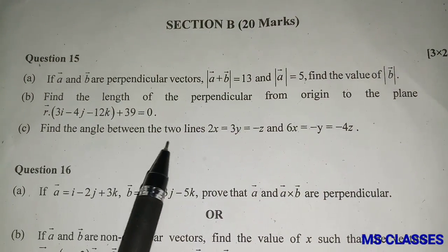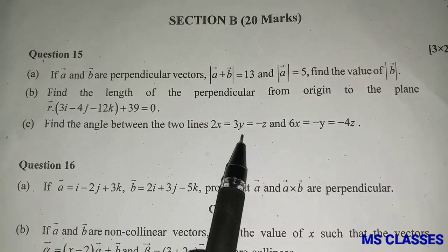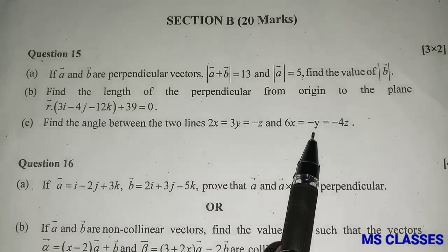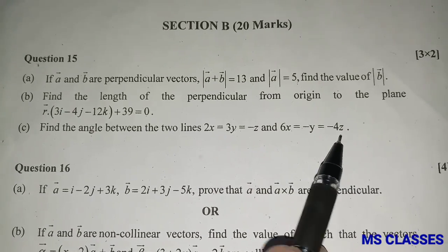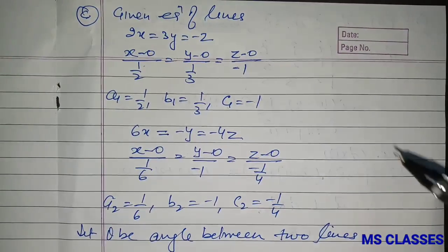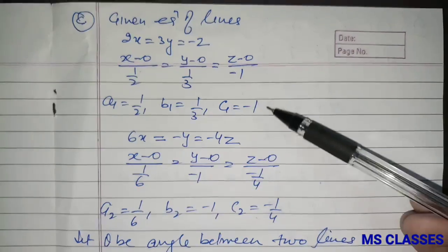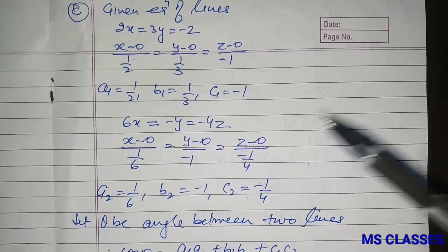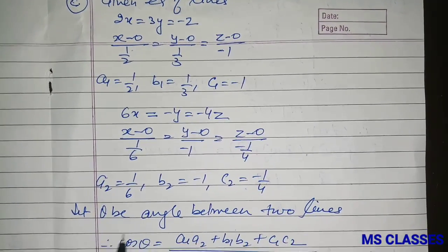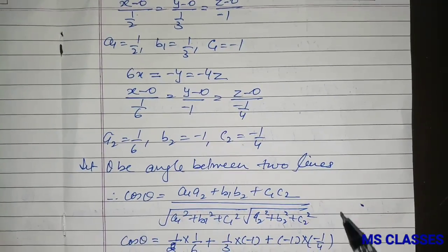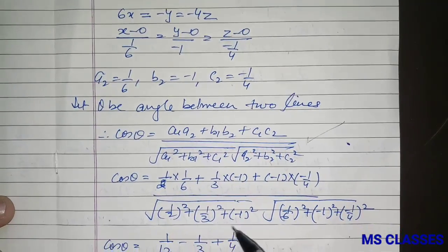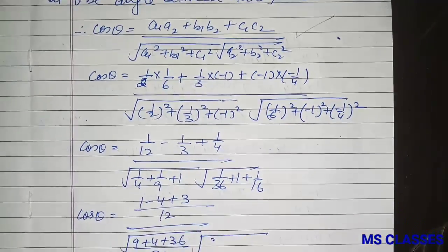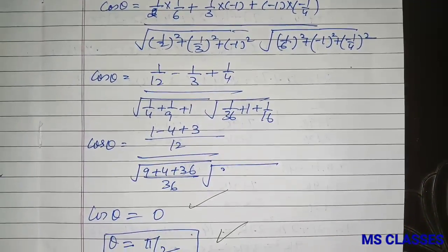Find the angle between the lines 2x = 3y = -z and 6x = -y = -4z. From each equation, extract direction ratios. Using the angle formula cos θ = (a₁a₂ + b₁b₂ + c₁c₂)/(|d₁||d₂|), after substituting and solving we get cos θ = 0, so θ = π/2. The lines are perpendicular.